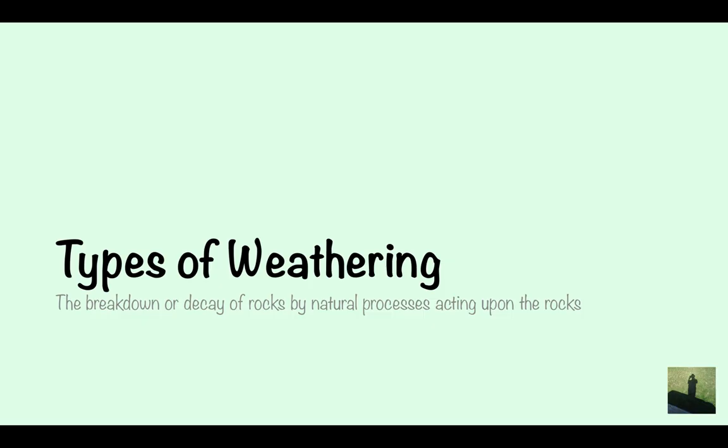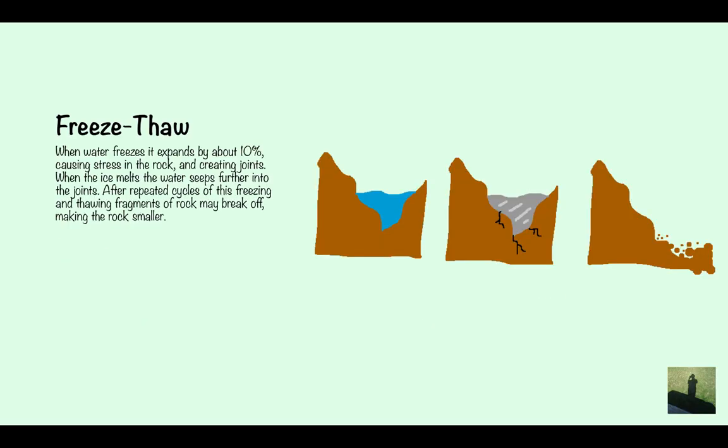The first one is freeze thaw weathering. When water freezes it expands by about 10%, so this causes stress in the rocks and creates joints. When the ice melts the water seeps further into the joints. After repeated cycles of this freezing and thawing, fragments of rock may break off making the rocks smaller. As you can see we've got the water in here, then it's freezing and it's expanded so it's going to create cracks and joints in the rock. But then when it goes back to its liquid state it's going to go into these cracks and make the cracks get bigger and bigger until eventually when this has happened over and over it's going to just crack and there's going to be loads of little rocks that are created.